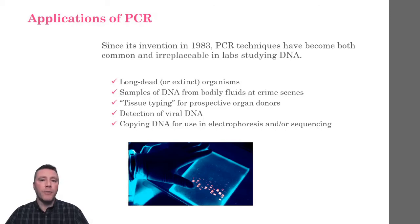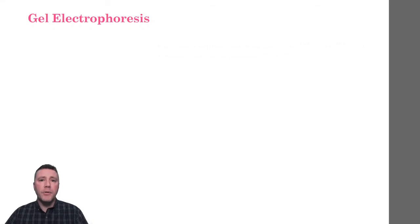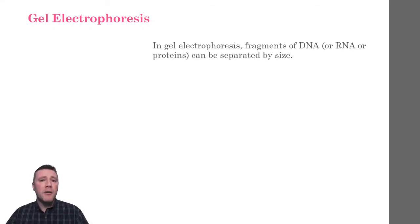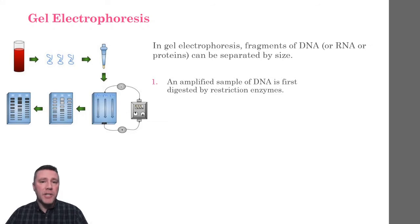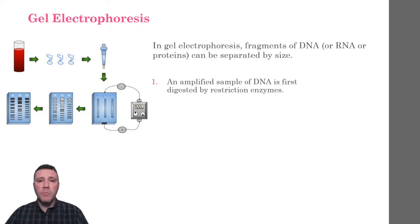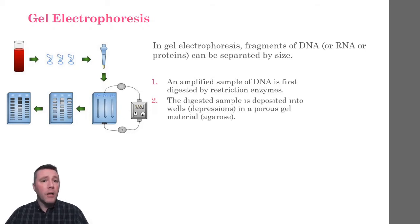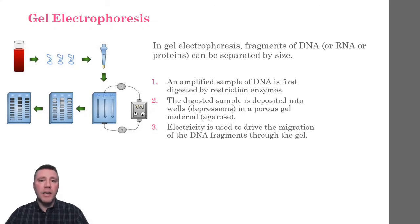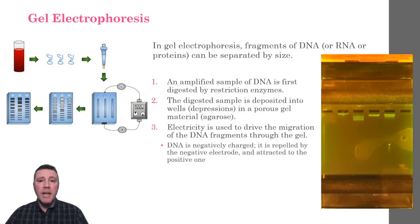Now let's take a look at gel electrophoresis. Gel electrophoresis is a method used to separate fragments of macromolecules, such as DNA, based on their size and charge. The process begins when an amplified sample of DNA is digested by a collection of restriction enzymes. Because the restriction enzymes cleave DNA at specific recognition sites, the digestion yields a collection of DNA fragments, some of which are relatively large and some relatively small. The digested sample is transferred to the well of a porous gel-like material and then an electrical current is applied. The phosphates in the backbone of DNA confer a negative charge to the molecule, resulting in the DNA being repelled by the negative electrode and attracted to the positive one as it migrates through the gel.